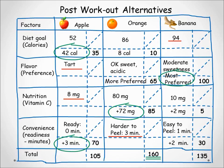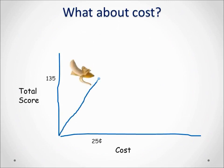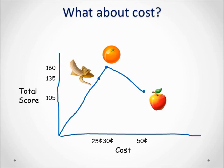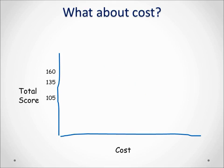But let's continue the CBA with the consideration of cost. In our example, the banana costs 25 cents, the orange costs 30 cents, and the apple costs 50 cents. In this case we decide the 25-point advantage of the orange over the banana is worth the extra 5 cents, and therefore supports our decision to buy the orange.